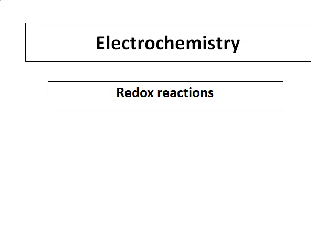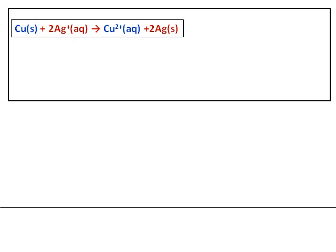Now let's learn something about electrochemistry and let's start with redox reactions. Consider the reaction copper solid reacting with 2Ag+ giving you Cu2+ plus 2Ag. Before we proceed further, let's just divide it into two half reactions.